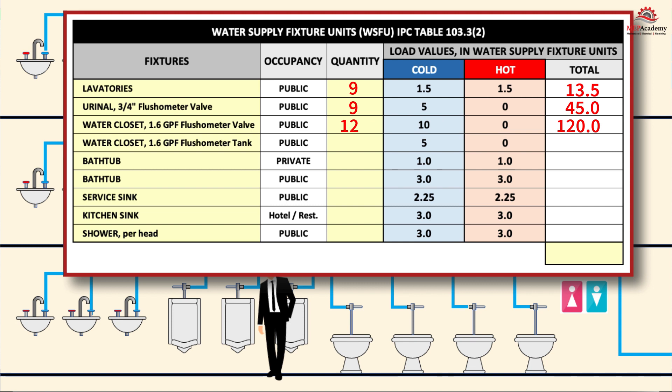Add up the WSFUs for all fixtures in the building to get the total WSFUs, including totals for each branch and riser. Note that water flow demands for cooling towers, RO systems, process equipment, or landscaping have not been considered here — the plumbing engineer will need to work with other trades to determine their water needs. In our example, we have 13.5 WSFUs for lavatories, 45 for urinals, and 120 for water closets, for a total of 178.5 fixture units.